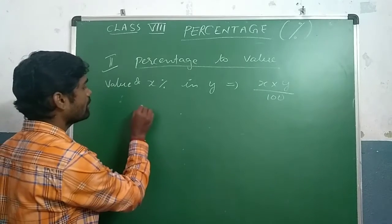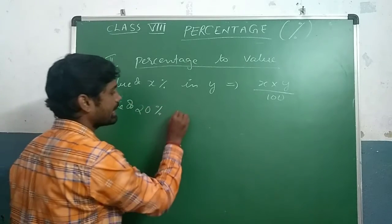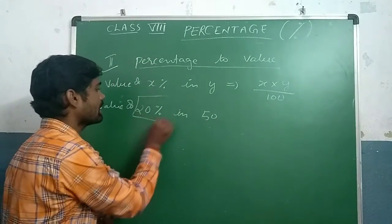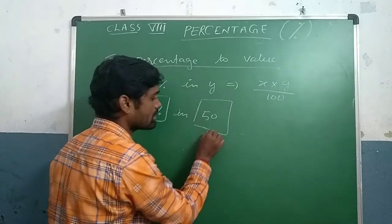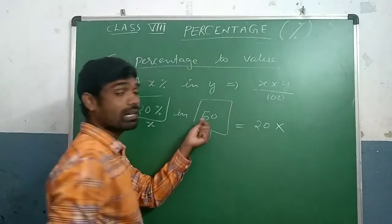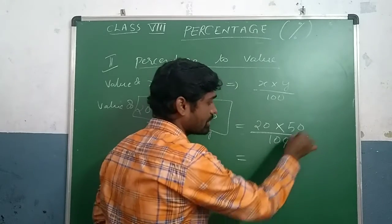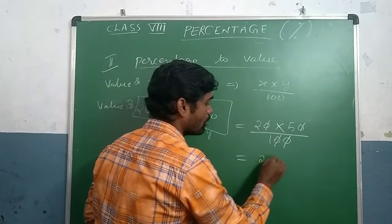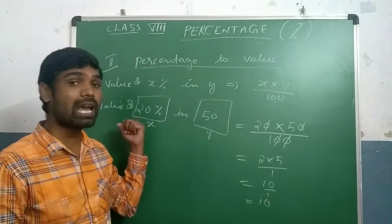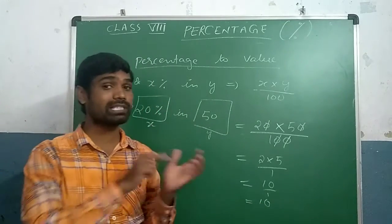Let us see one example: value of 20 percent in 50. Here x is 20 and y is 50. Using the formula: 20 into 50 by 100. Simplifying the zeros: 2 into 5 by 1, which is 10. So the value of 20 percent in 50 is 10. This is the way we can find percentage to value.